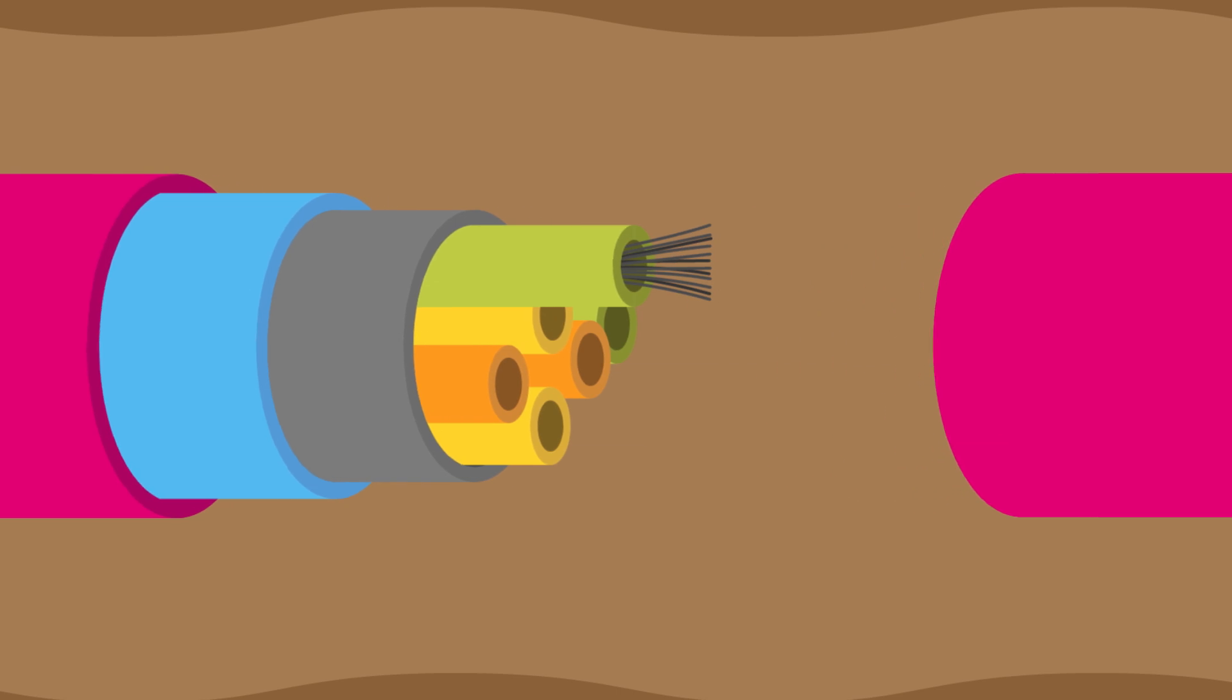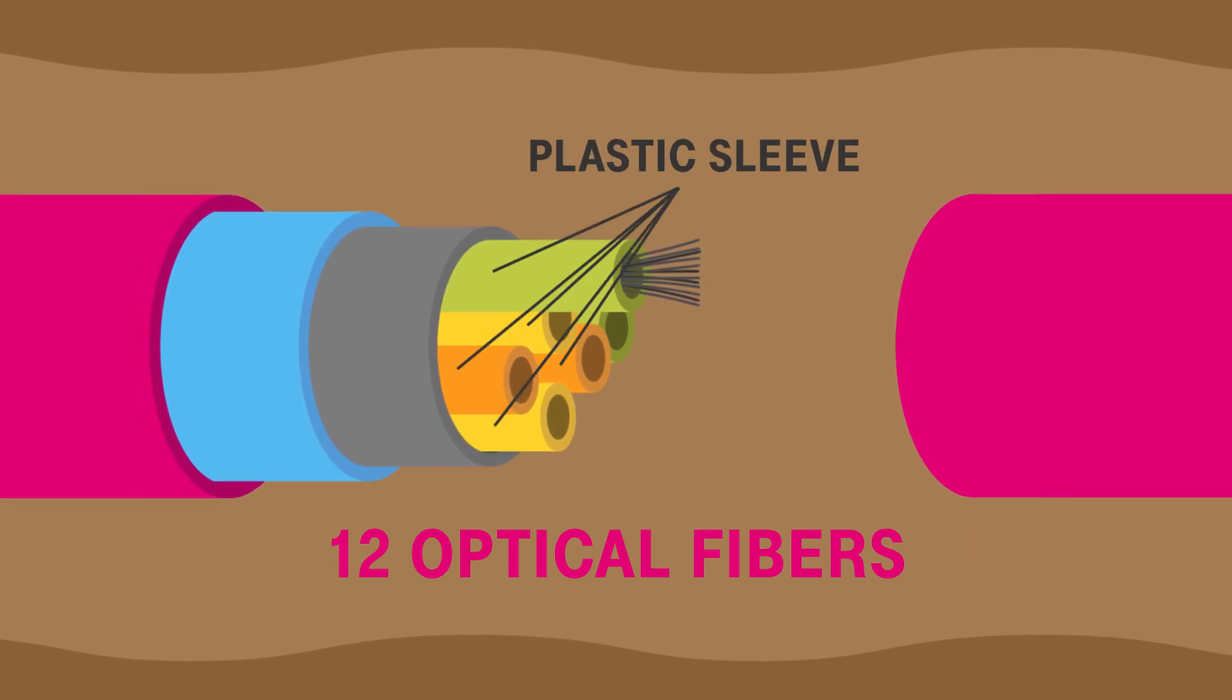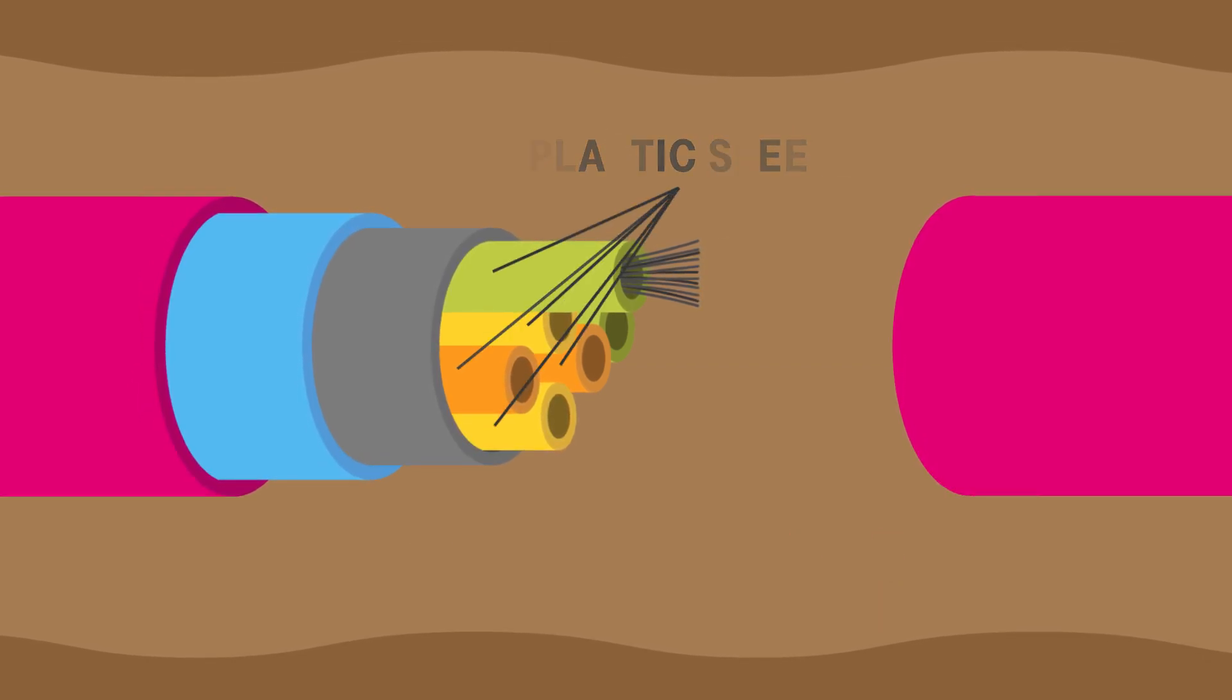A typical glass fibre is made up of not one, but many optical fibres. Each contains 12 optical fibres that are joined in a plastic sleeve, a loose tube. These tubes together form a fibre optic cable.